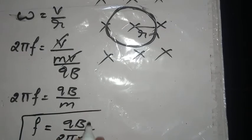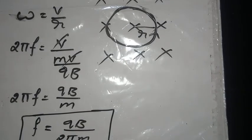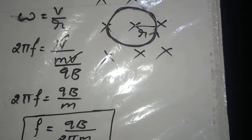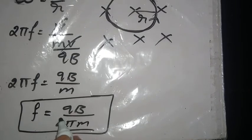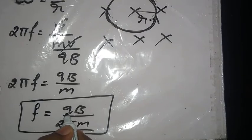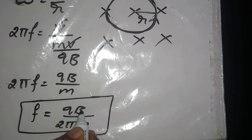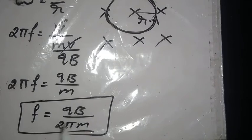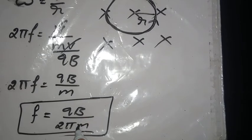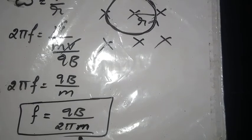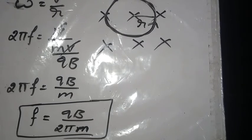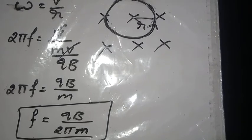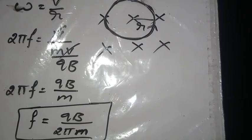Hence, this is the expression for the frequency of revolution of the charged particle in a circular path. The frequency of revolution is directly proportional to the magnitude of the charge, and directly proportional to the strength of the magnetic field, and inversely proportional to the mass of the charged particle. This is a very important point for the CET, JEE, and also the board exam.